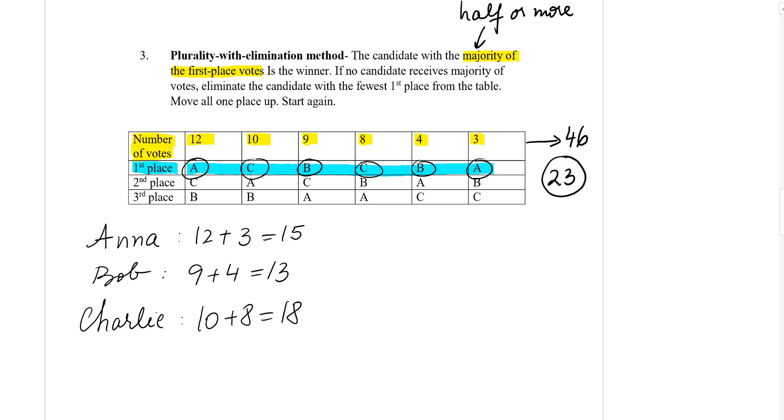So if we take a look at the values that we got, 15, 13, and 18, none of them satisfies the majority. None of them is more than 23. So because of that we're going to do what they say: if no candidate receives majority of votes, eliminate the candidates with the fewest first place from the table.